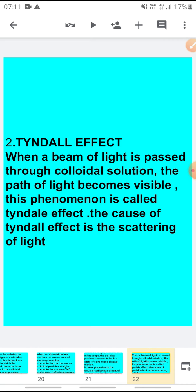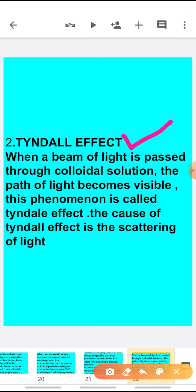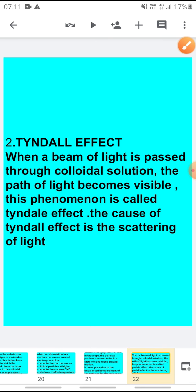The second property is the Tyndall effect, which you have learned earlier also. When a beam of light is passed through a colloidal solution, the path of light becomes visible, and this phenomenon is called the Tyndall effect. The cause of Tyndall effect is the scattering of light. For example, in a dark closed room with a small hole through which sunlight enters, you can see dust particles dancing in air — that is also because of the Tyndall effect.